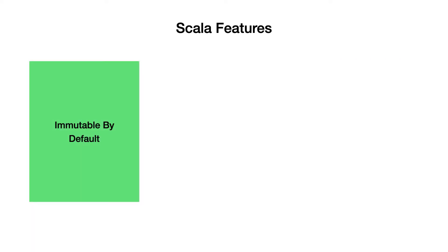As programmers, we have all chased bugs when variables change their values or when objects have been modified after they have been created. We hate them. This is because such sneaky bugs do not help us learn in comparison to the time we spend finding them. Scala as a language favors and promotes immutability. This concept is not new and not exclusive to Scala or functional programming, yet many languages do not promote it well enough. We will learn about immutability in this course, so be sure to check out the later modules.